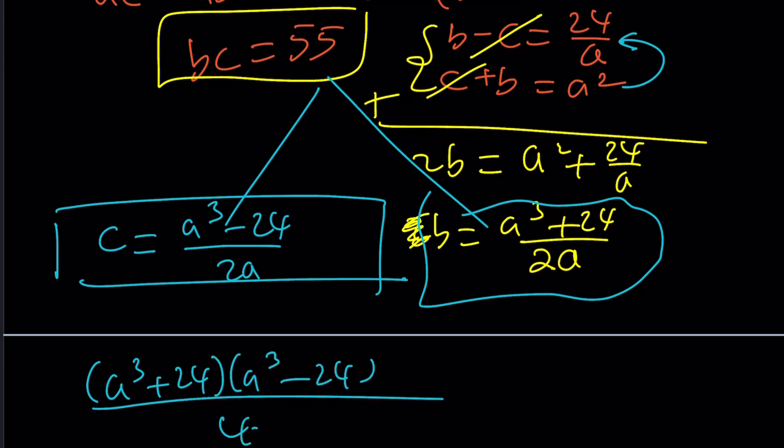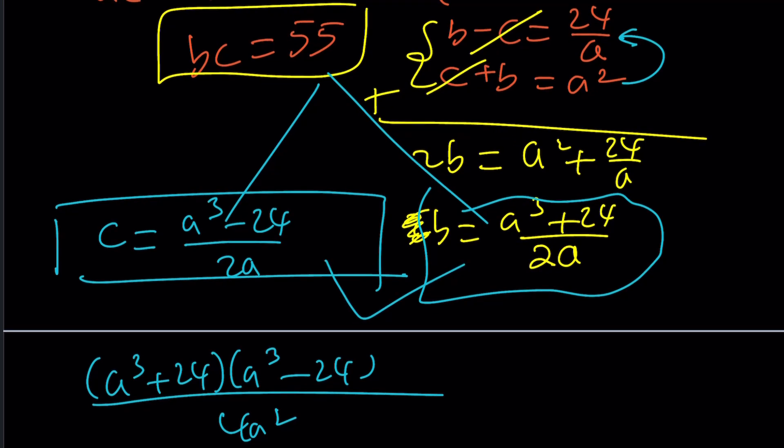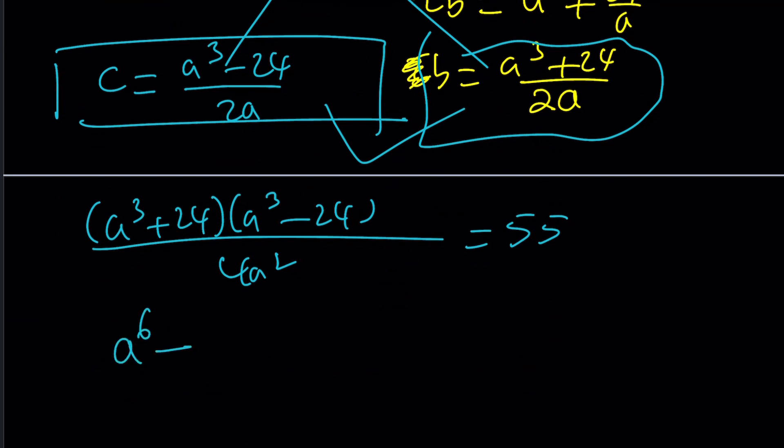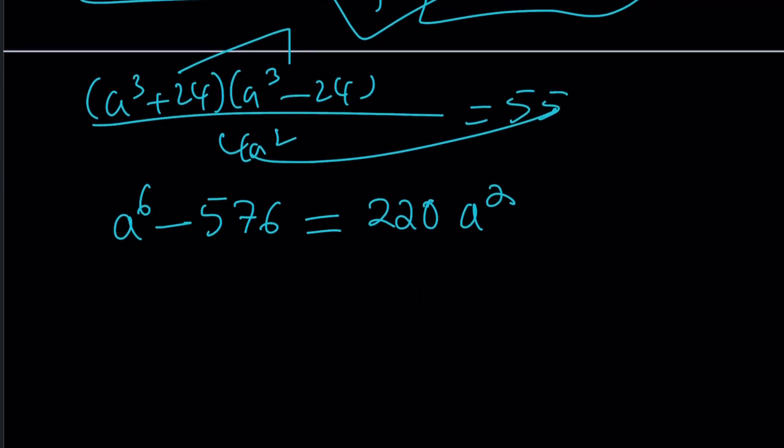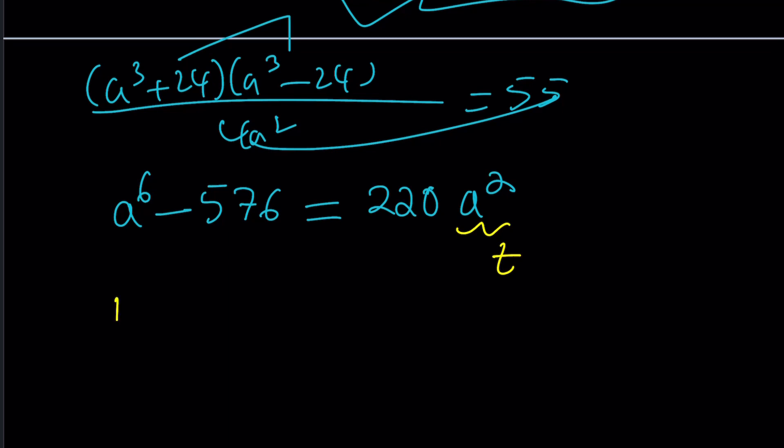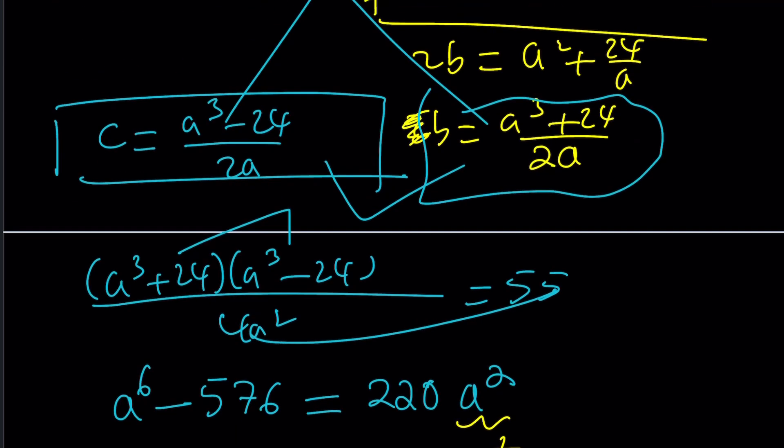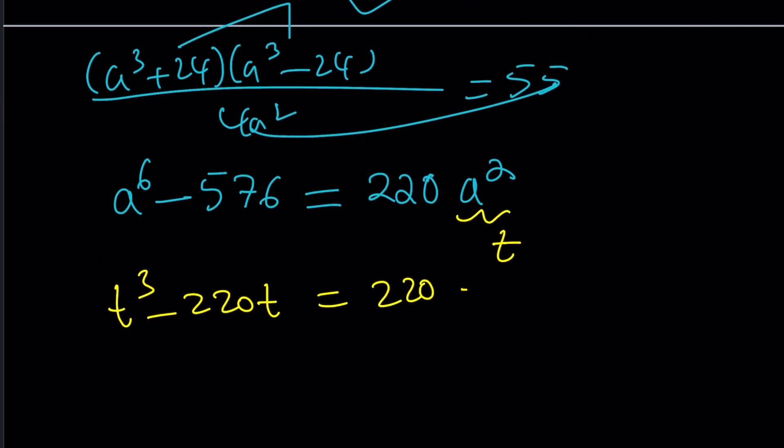Let's go ahead and put it together. a cubed plus 24 times a cubed minus 24. I'm multiplying the numerators. And the denominators will give me 4a squared. And that's equal to 55. Now let's go ahead and multiply. a to the 6 power minus, this is a difference of two squares with cubes, 24 squared is 576. And if you cross multiply, that's going to give you 220a squared. Now this may look like a hexade equation. It's supposed to be 576.